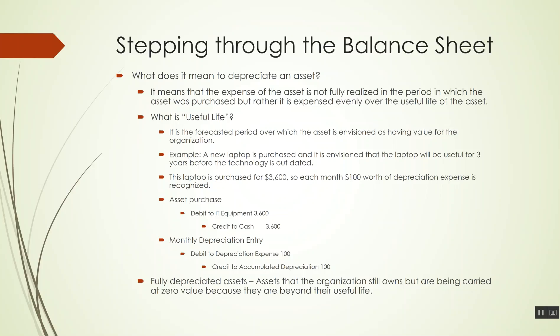Then at the end of the month, we have to depreciate it. We're going to be moving a portion of that asset's value from the balance sheet over to the income statement. When we book that monthly depreciation entry, we're going to be debiting depreciation expense for $100. Now, one interesting thing here: we don't credit the fixed asset directly. Rather, we credit what we call an accumulated depreciation account, which is referred to as a contra asset account.